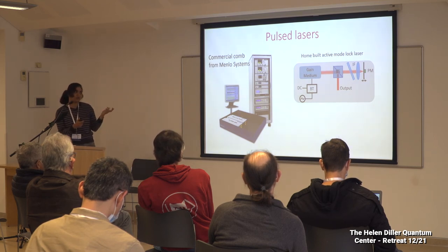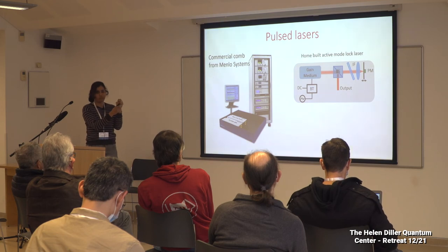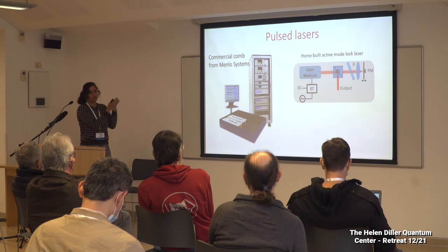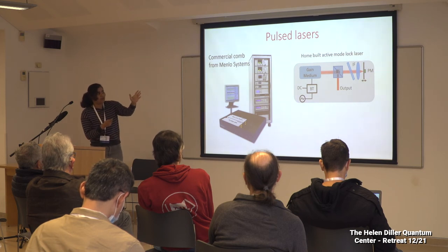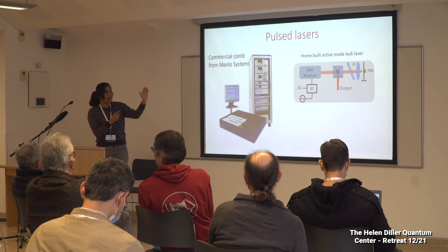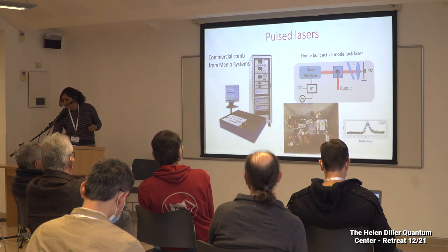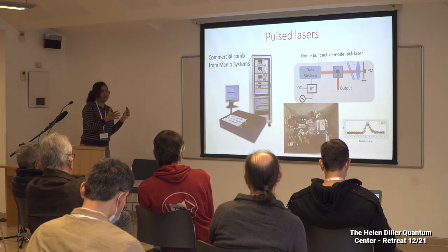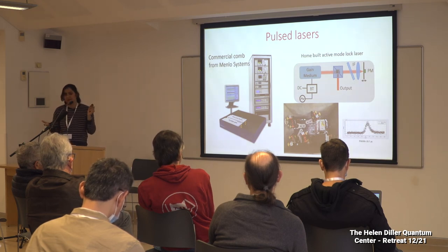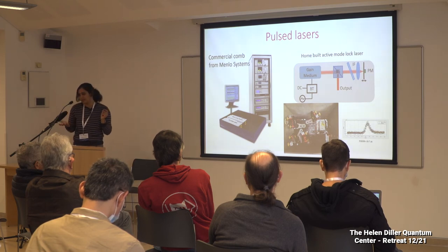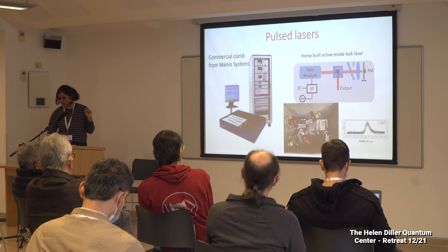The home-built laser uses a gain medium modulated at an AC frequency. To have the repetition rate close to 250 megahertz, we modulate at 250 megahertz minus 50 kilohertz. We feed back half of the light into the laser through an external cavity to generate the laser output. It has a very long cavity to match 250 megahertz, and generates 20 picosecond pulses. With active mode locking this is the maximum — a few picoseconds — but it's good enough for us.